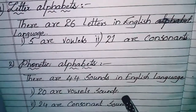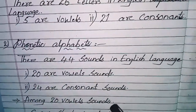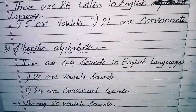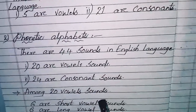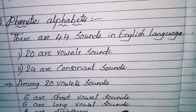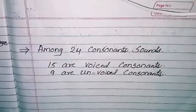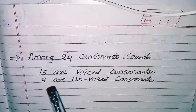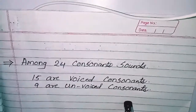Among the 44 sounds, 20 are vowel sounds and 24 are consonant sounds. Among the 20 vowel sounds, 6 are short vowel sounds, 6 are long vowel sounds, and 8 are diphthongs. Among the 24 consonant sounds, 15 are voiced consonants and 9 are unvoiced consonants.